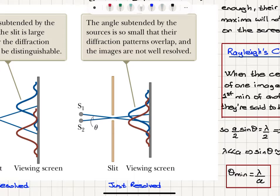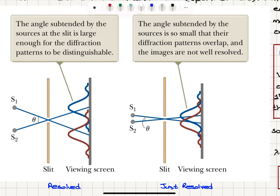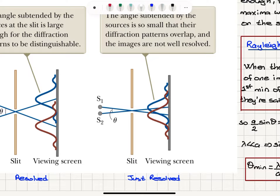So in this case, when we decrease the angle between the two, the diffraction pattern corresponding to source 1 and source 2 will have their maxima overlapping to some extent, and we will have a not very good resolution of these two sources on the screen.